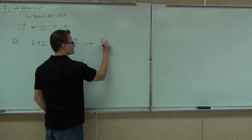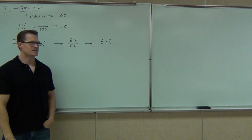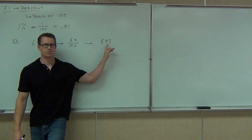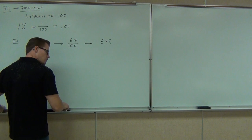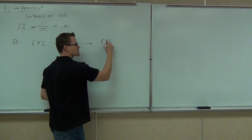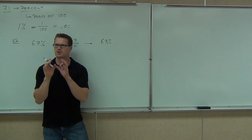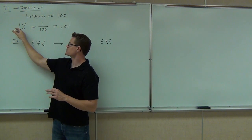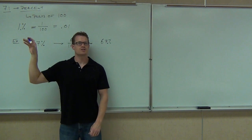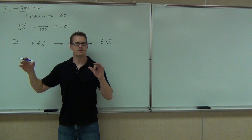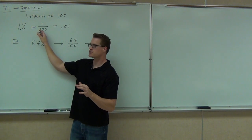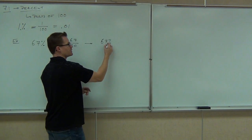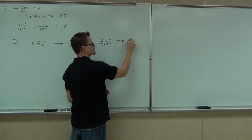So if you have 67%, in order to change from a percent into a decimal — from 1% to 0.01 — if you imagined your decimal place just after that number, you would move it two spaces to the left. Moving two spaces to the left is the same thing as identifying two zeros, just like dividing by 100 earlier. You'd move it two spots, and that's the same thing as 0.67.